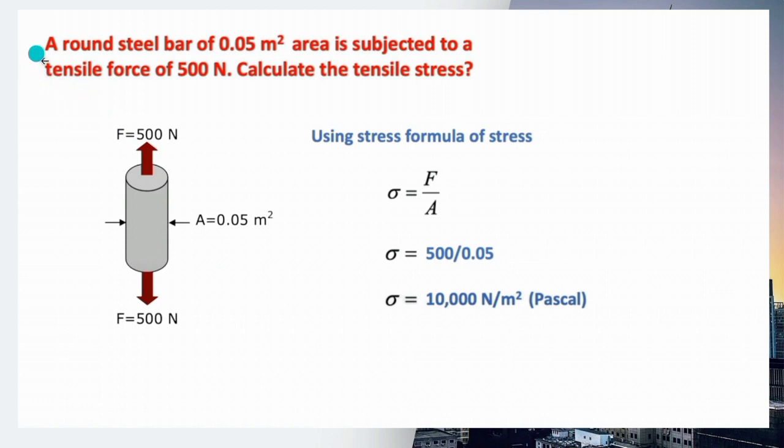A round steel bar of 0.5 meters squared area is subjected to a tensile force of 500 Newton. We need to calculate the tensile stress. We have here our illustration showing the tensile force.